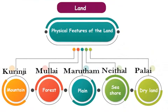We also learned the 5 types of landforms in the Sangam age, which were divided on the basis of the work done by the people: Kuringi, Mullai, Marudam, Nedal, and Palai. We learned about the Kuringi land in the last class.